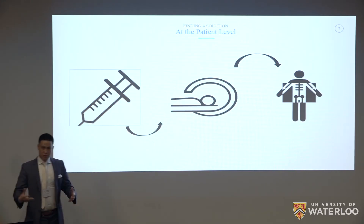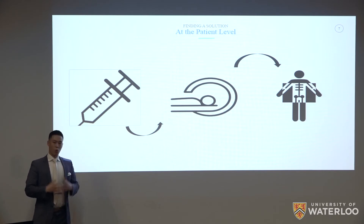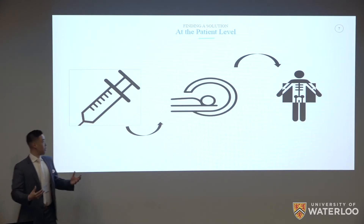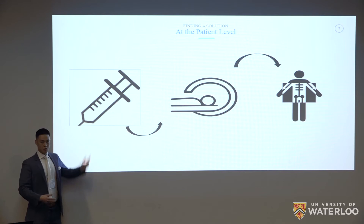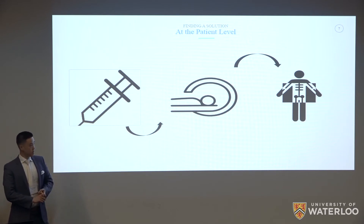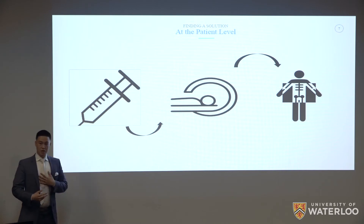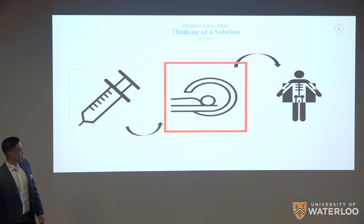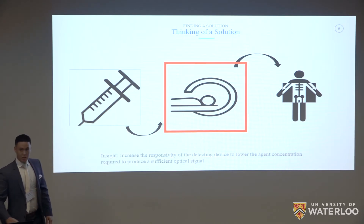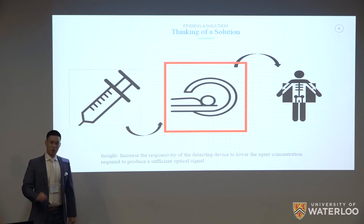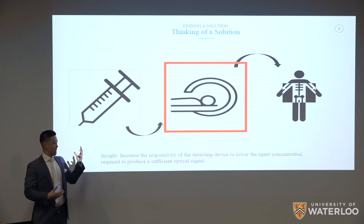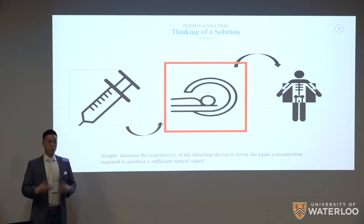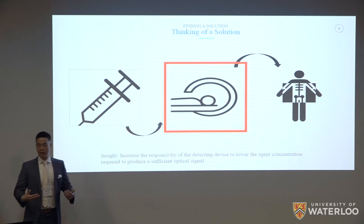When thinking of a solution, we looked at this process and asked where we could intercept the problem. A lot of research has been done on different types of biomolecules that may not cause adverse side effects, or even targeted delivery. But we decided to focus our efforts on the detection methods. By making the detector more optically responsive to those fluorescent agents injected into patients, you wouldn't need to inject as much, thus reducing the risk of adverse side effects.